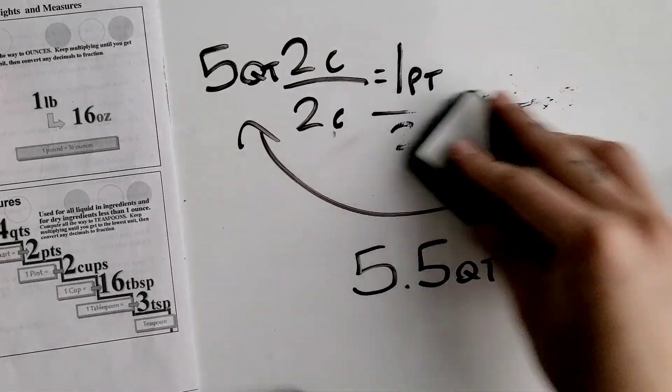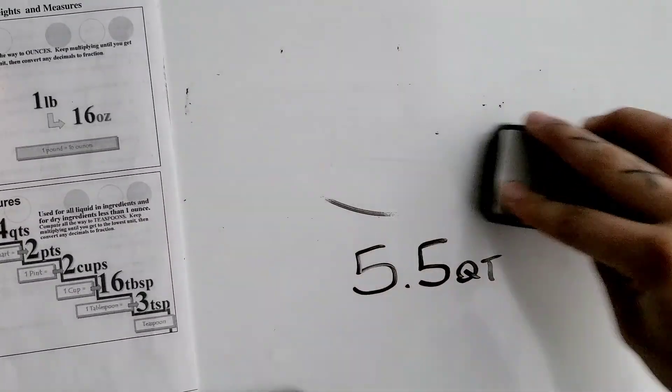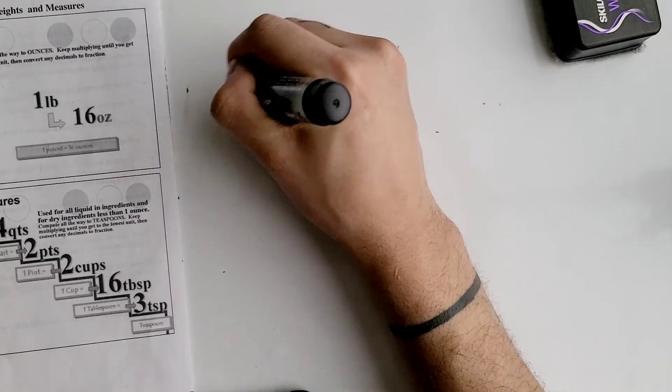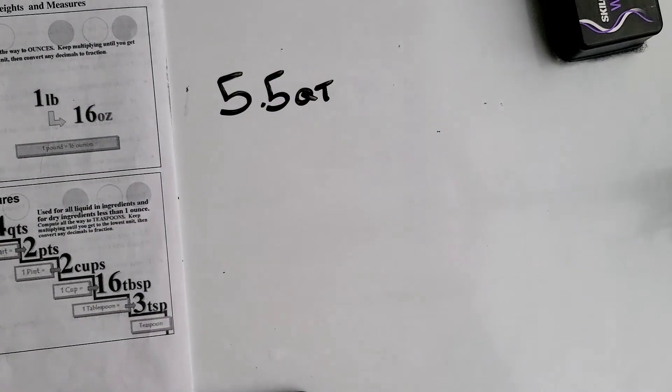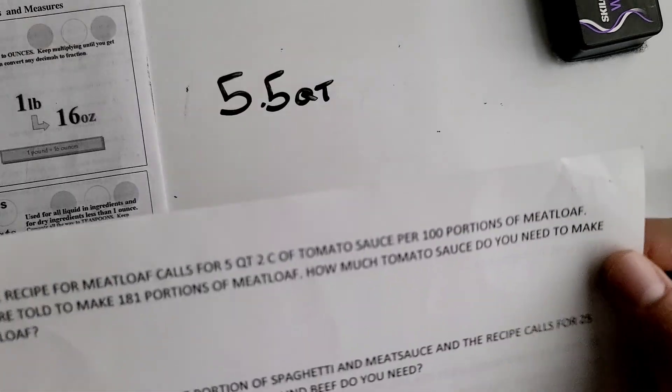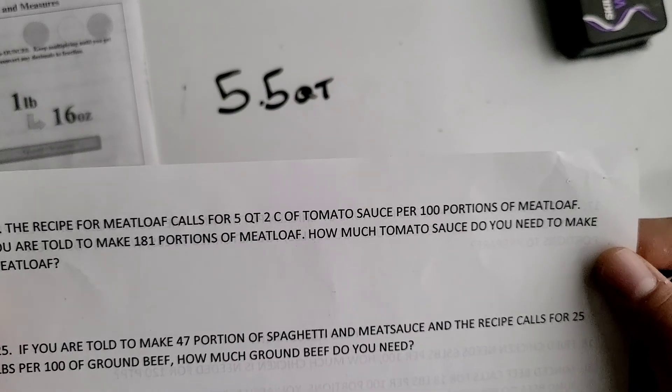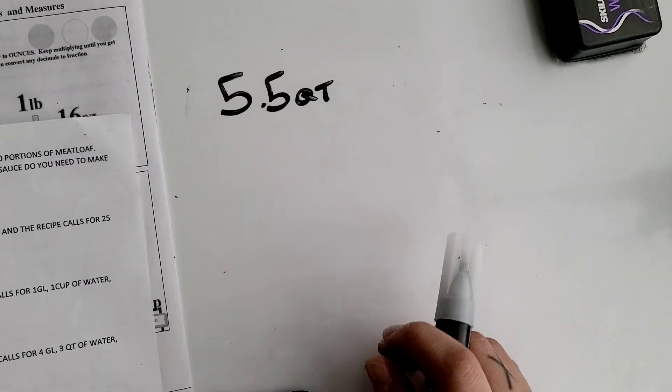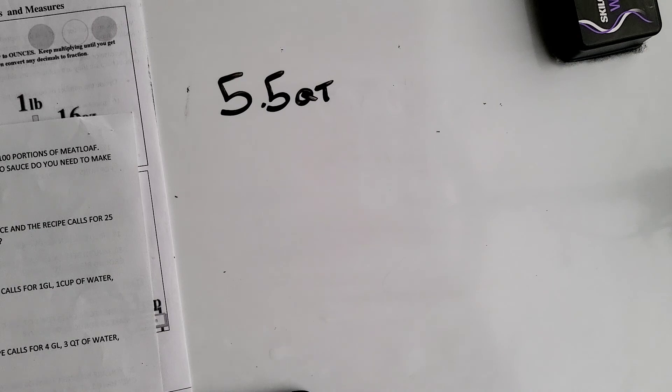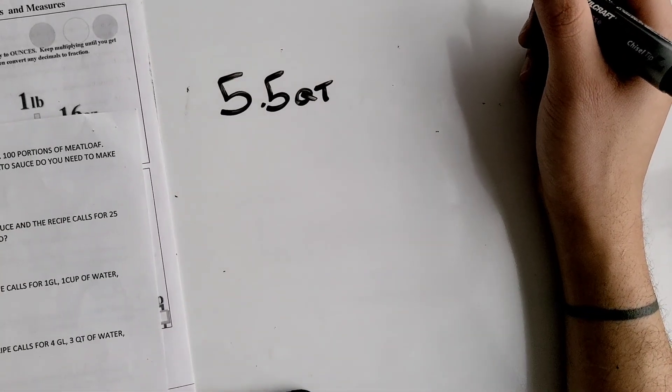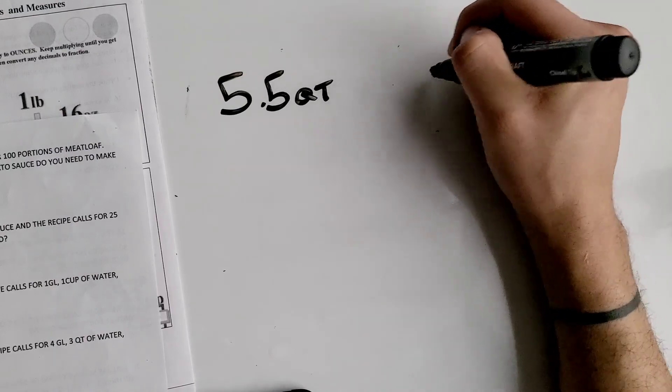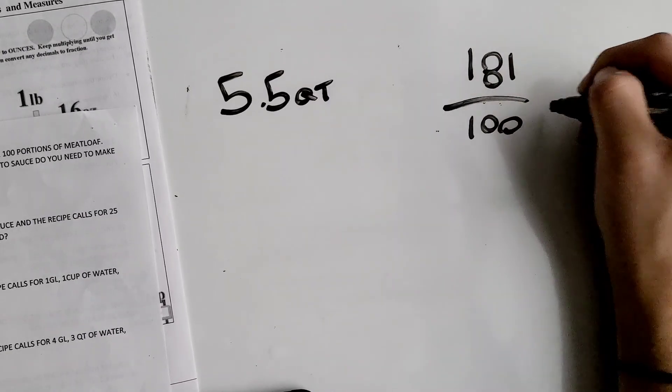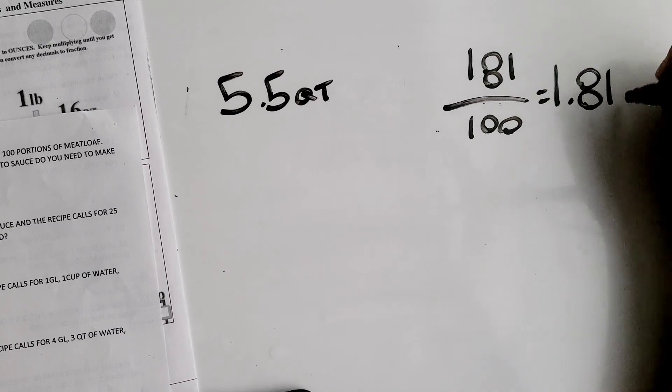After we have it into a single unit, we have to multiply that by your working factor. You are told to make 181 portions of meatloaf. To find your working factor, you have to get your portions to prepare and divide that by 100. So 181 divided by 100 equals 1.81. So this is your working factor.